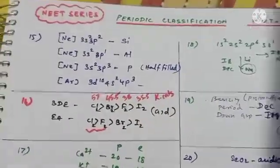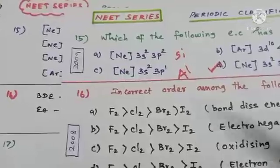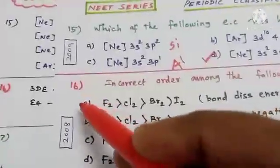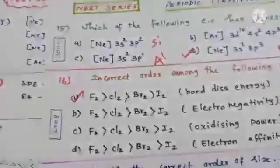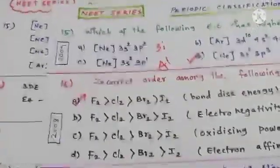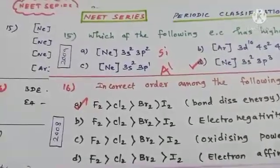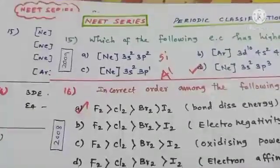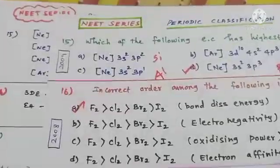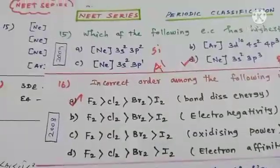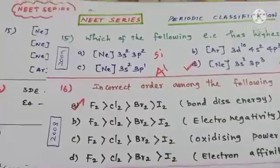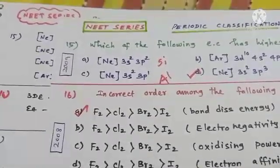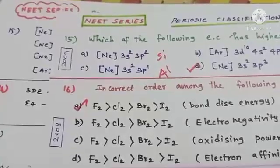Fluorine is placed incorrectly in the given order — it should come after bromine, so option A is an incorrect statement. For option B, electronegativity decreases going down the group, so that order is correct. Option C, oxidizing property, also decreases gradually down the group with no anomalies — so option C is also correct.